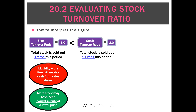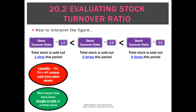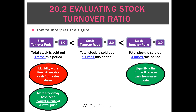Maybe we bought stock in bulk and got a discount, which is a good result, but just not yet. On the flip side, what if the stock turnover ratio went up from 2 to 3? We'd say that's a really good result because that means we sold stock more or faster, or turned it over more often this period. That is going to mean we're going to get cash from sales quicker.